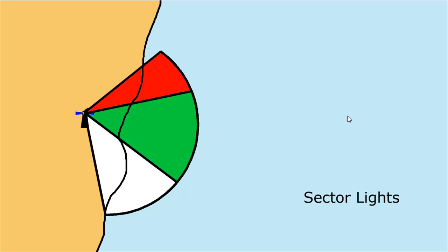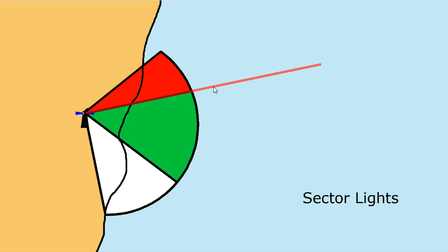Another form of position line is produced as you cross between one sector light and another. A sector light is a light which indicates by its colour areas of danger and areas of safe water — in this case, the red light represents areas of danger and the green light represents areas of safe water. Where you travel from one colour to another, you will cross a line where the colour changes, and that line can be used as a position line. If you are on the position where it changes from one colour to another, you know that you are exactly on that position line, and you can draw that on your chart.